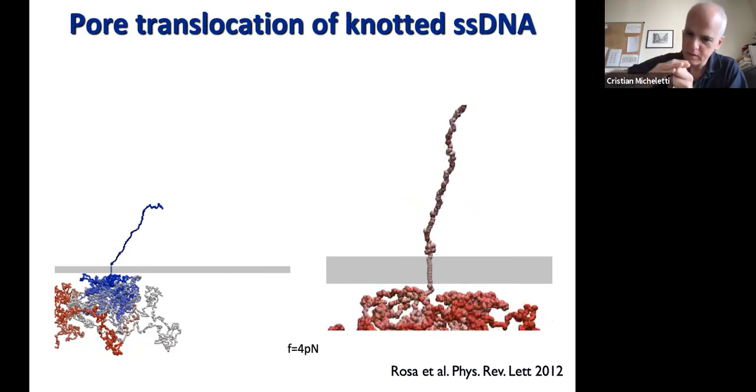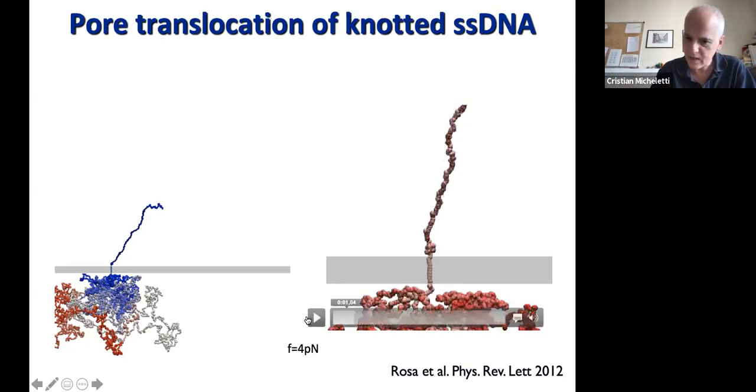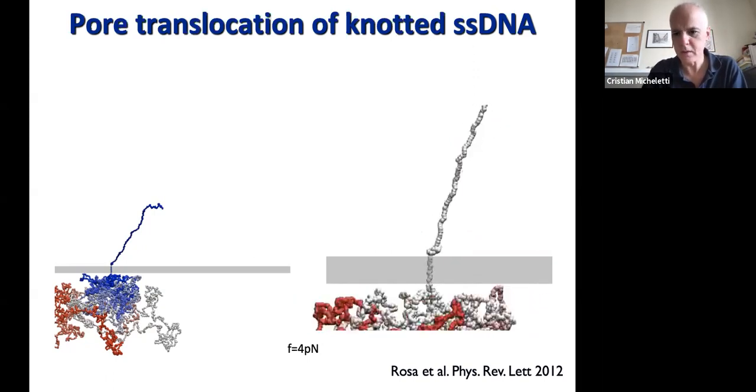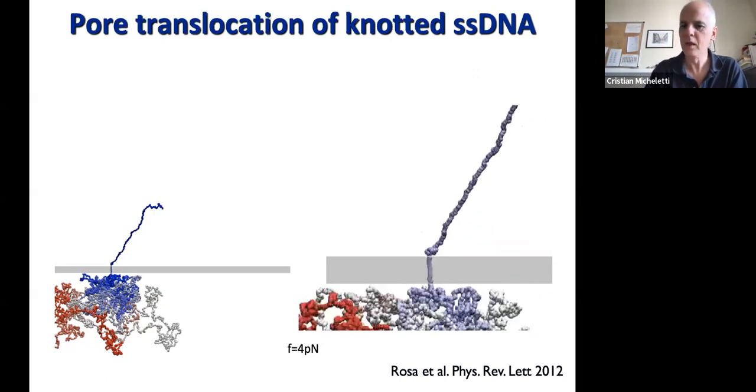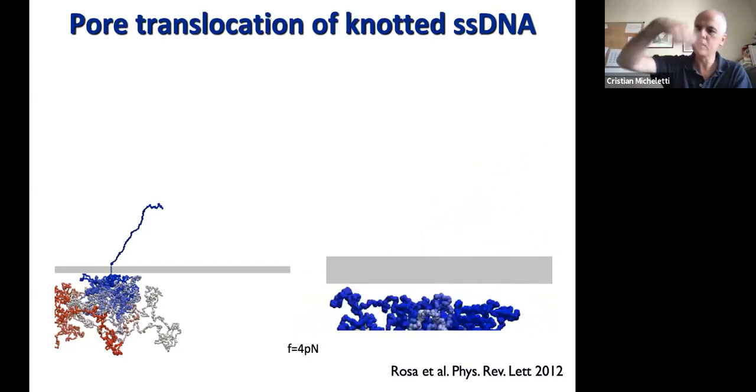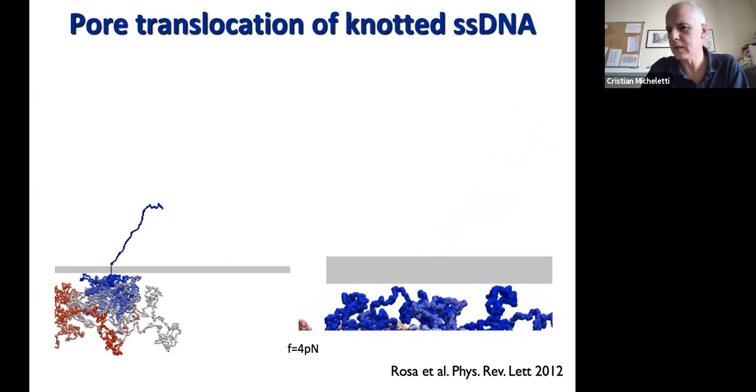Now you see there is this blob here—this is the knot. The knot was initially far up, and as we pull the chain, the knot tightens and gets squashed against the pore entrance. It stays there. It cannot go through. But the chain is able to slide along the knotted contour and pass to the other side.